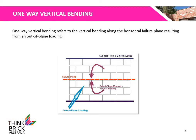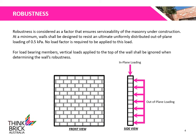One-way vertical bending refers to the vertical bending of a wall given an out-of-plane loading such as wind or earthquake loads. As you can see in the diagram, vertical bending occurs along the horizontal failure plane that results from the out-of-plane loading. Robustness is considered as a factor that ensures serviceability of the masonry under construction. At a minimum, walls shall be designed to resist an ultimate, uniformly distributed out-of-plane loading of 0.5 kPa. For load-bearing members, vertical loads applied at the top of the wall shall be ignored when determining the wall's robustness.